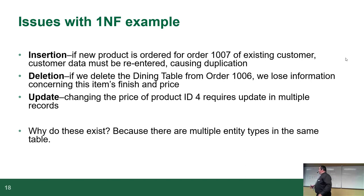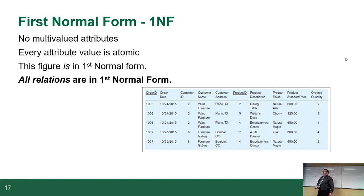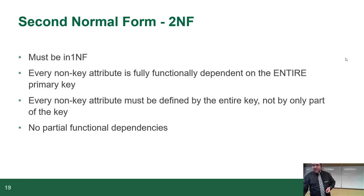These anomalies exist because there are multiple entity types in the same table. Right now the table contains orders, customers, products, and quantities — some belong to the order, some to the customer, some to the product. The table has three different personalities inside it, suffering from split personality disorder. To resolve these problems we need to move to second normal form.